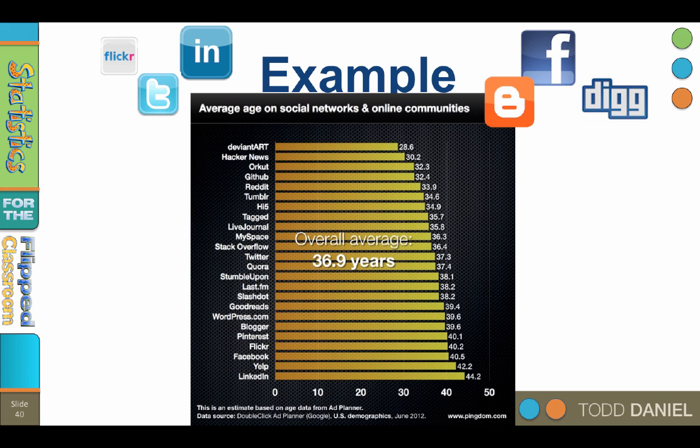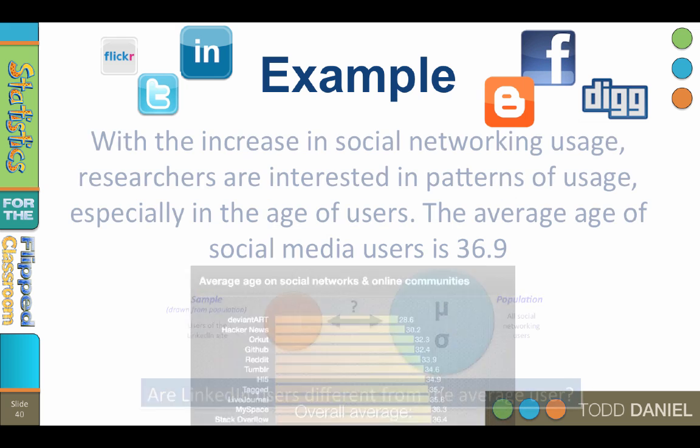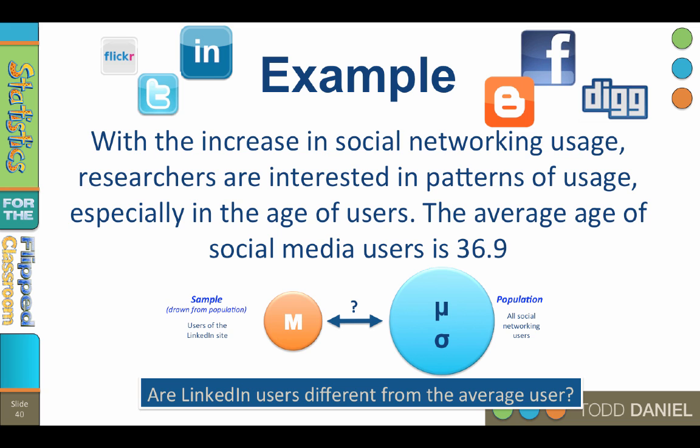I'm going to use a different example to illustrate how to conduct a one-sample z-test, using some data I found on the internet about social networking. It concerns a bar chart about the average age of social network users on social networks and online communities. With the increase in social networking usage, researchers are interested in patterns of usage, especially the age of users. Research found that the average age of social network users in the United States is mu equals 36.9 years old. Our population is all social networking users, and our sample is a randomly selected group of social networking users from the website LinkedIn.